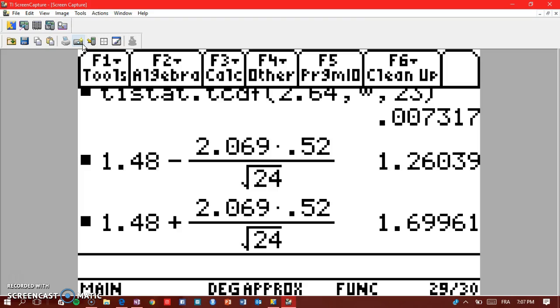And go to inverse norm, you can just put 0.025 because they will automatically know that that's a z-score, and it will give you the z-score for that 95%.